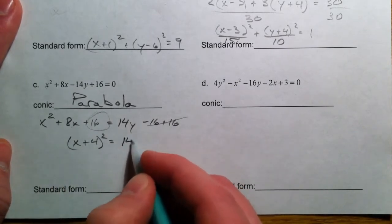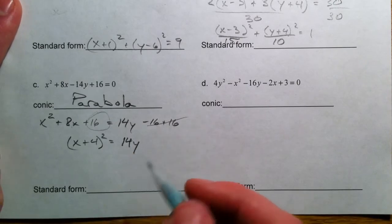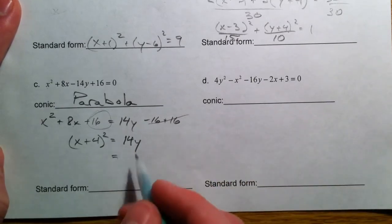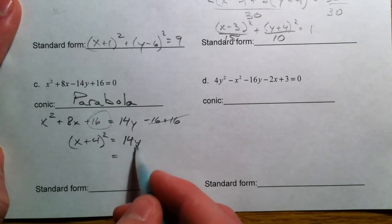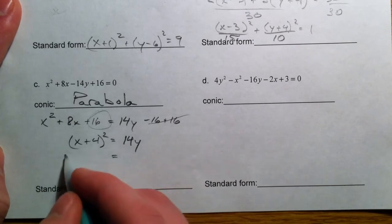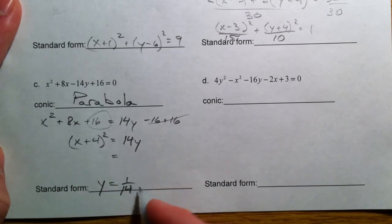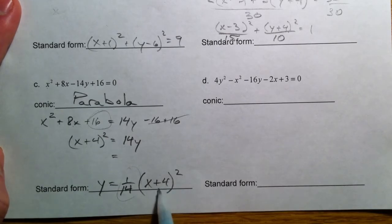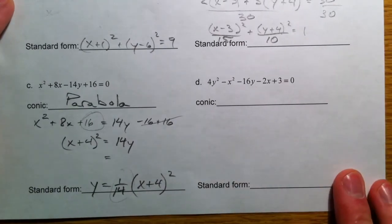And then we just end up with 14y. Because we want to get into standard form, we take the 14 to the other side. y equals 1/14th x plus 4 squared. So this is equal to our 1 over 4p. This plus 4 shifts it to the left 4. Alright.